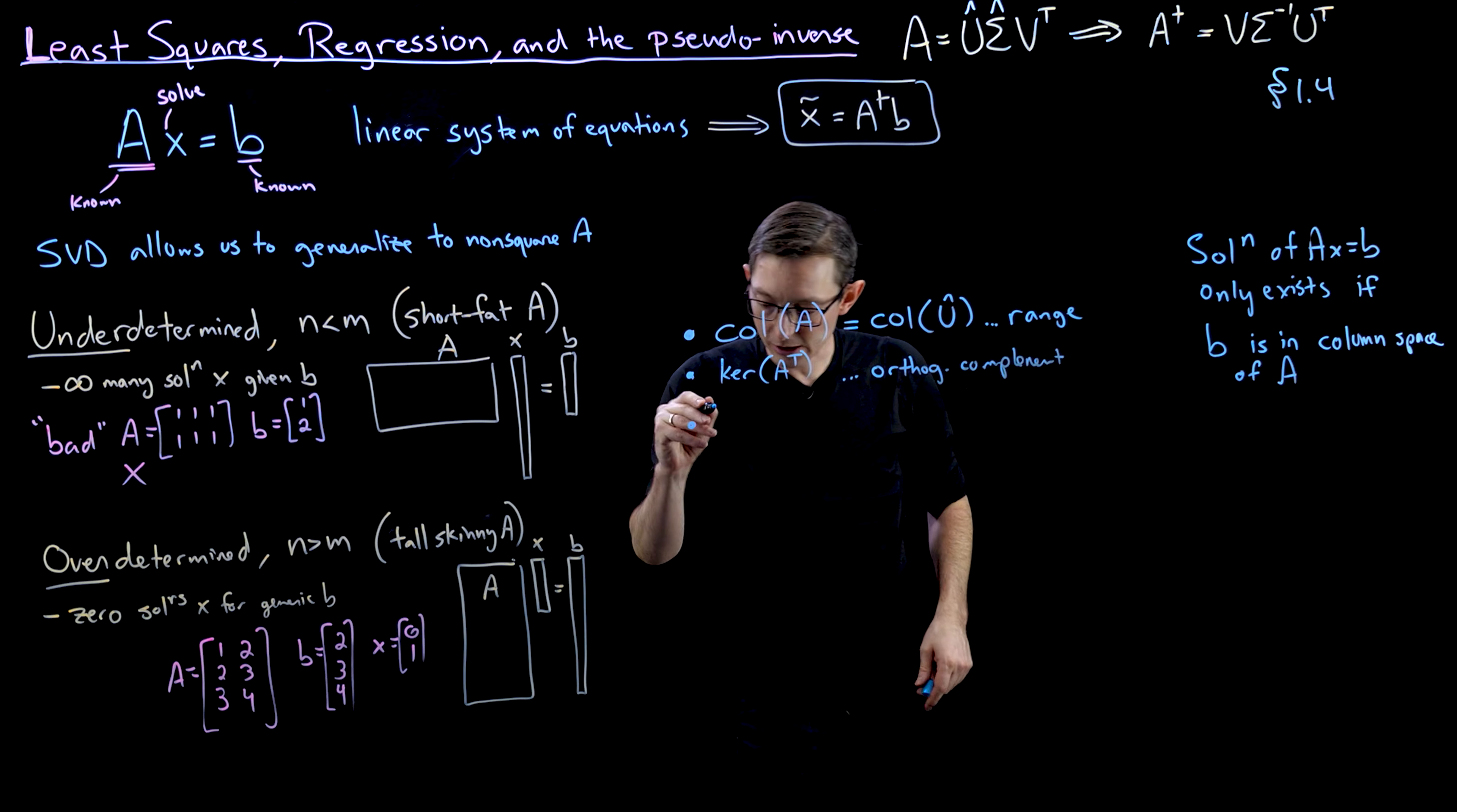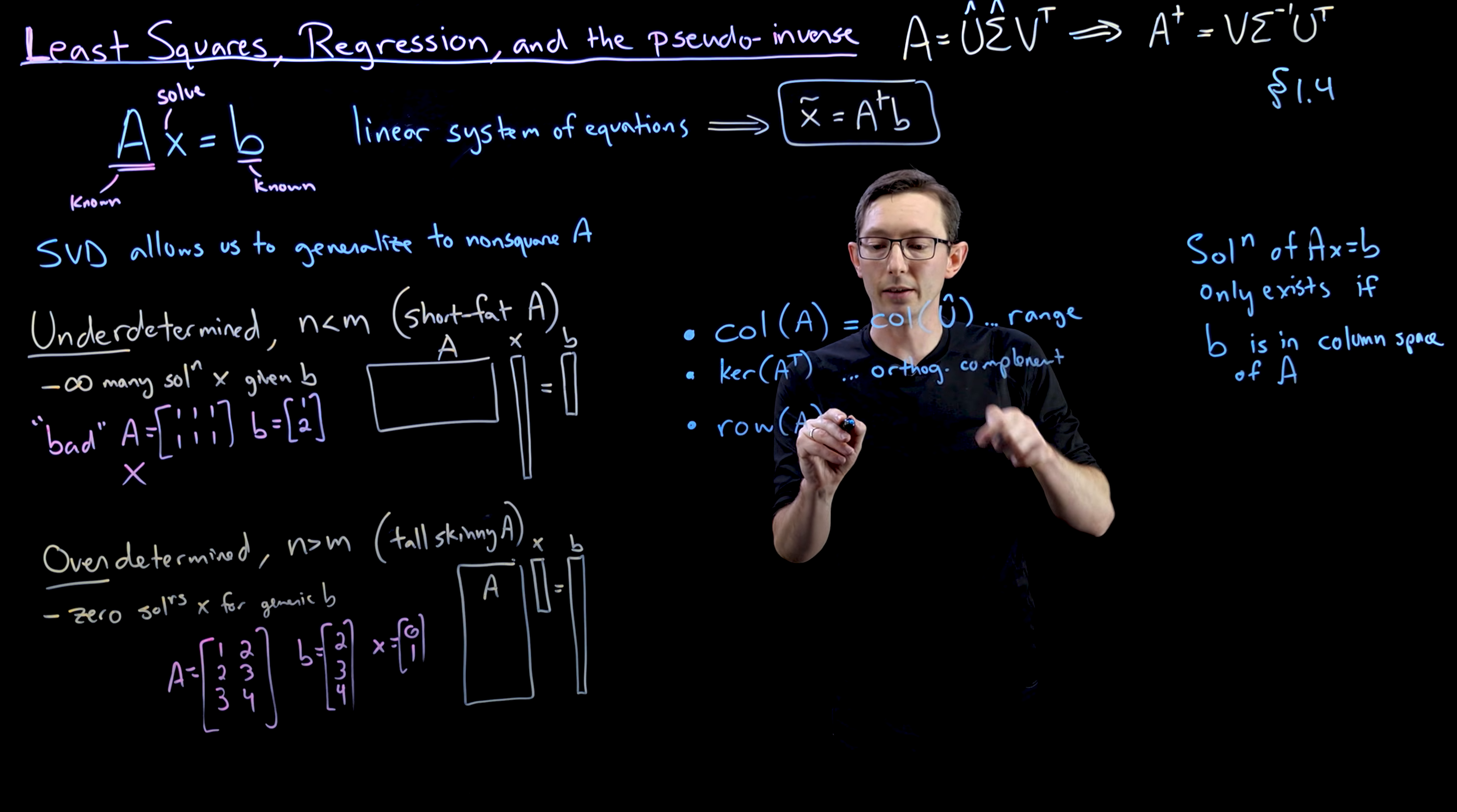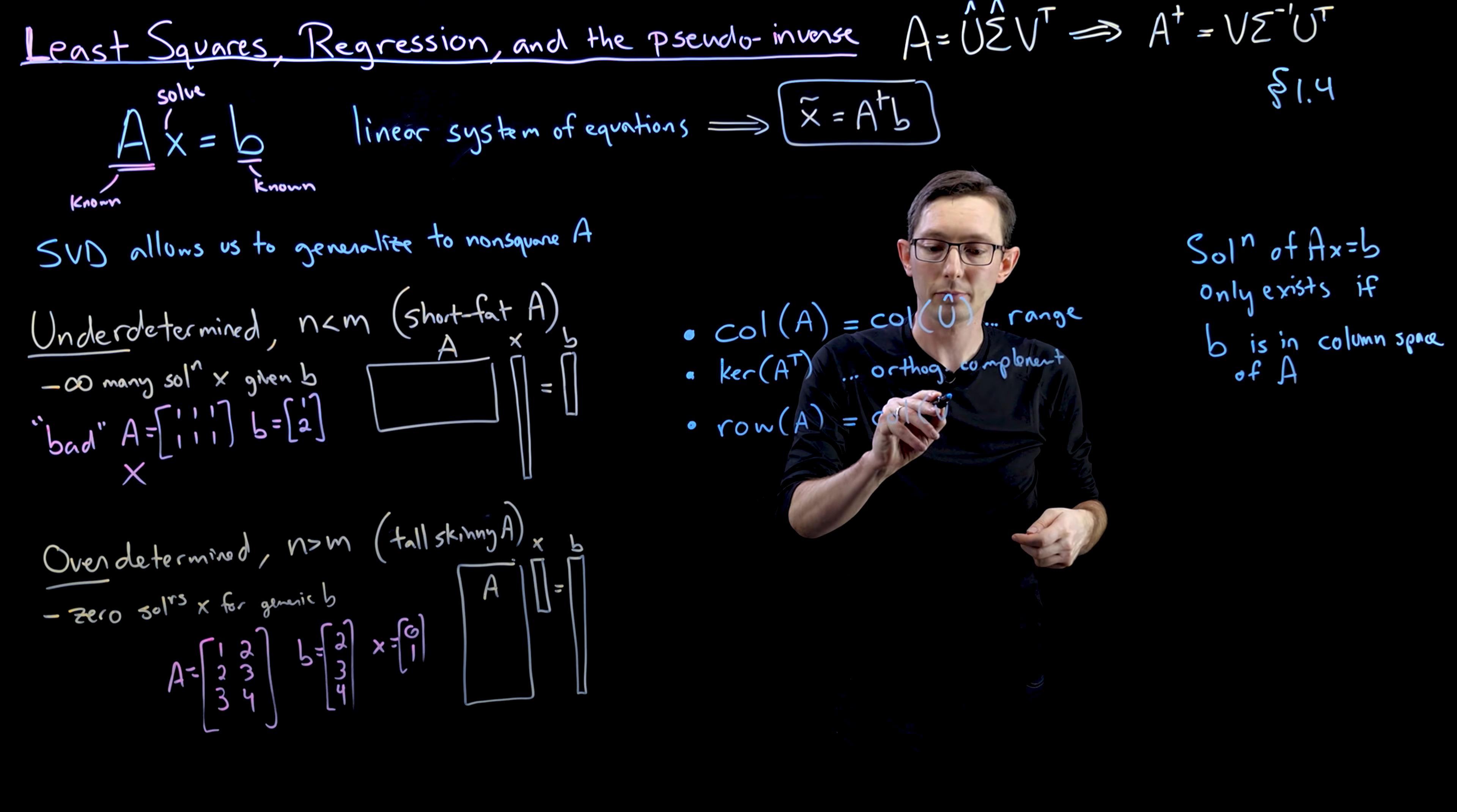Now for the row space, we similarly have row of A is the set of all vectors that can be spanned by the rows of A. And again, by construction, that's equal to the row space of V transpose, which is the column space of V.